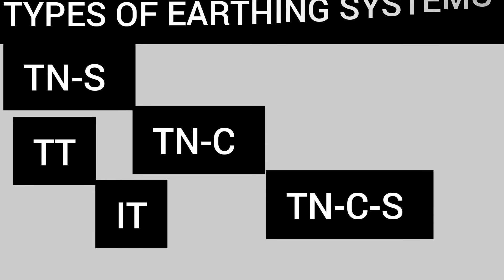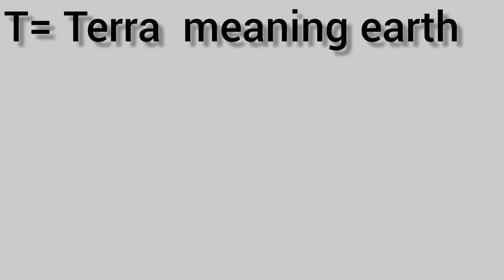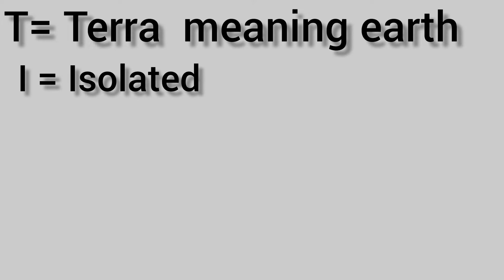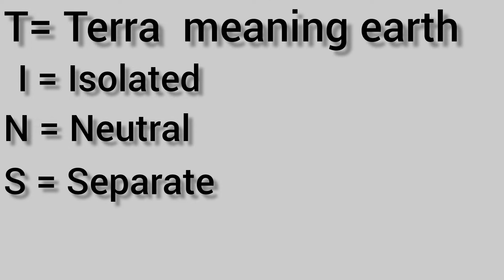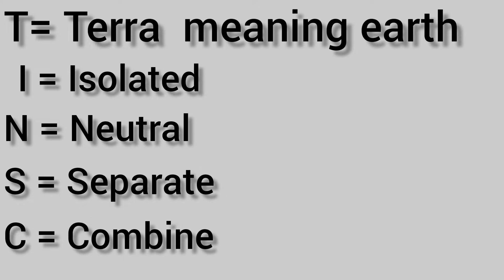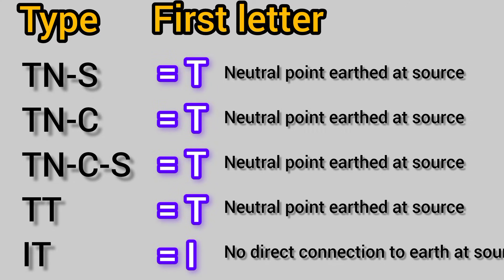Now let's look at what these letters actually mean. T means Terra — a Latin word which means earth. I means isolated. N means neutral. S means separate. And C means combined.